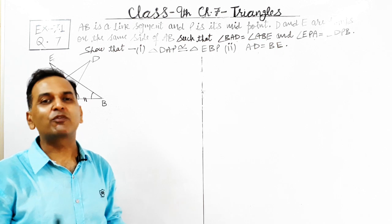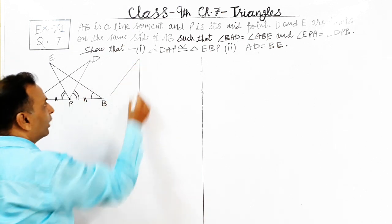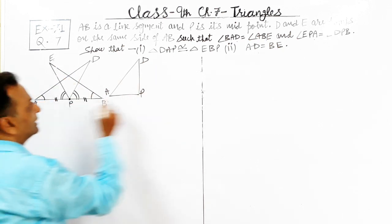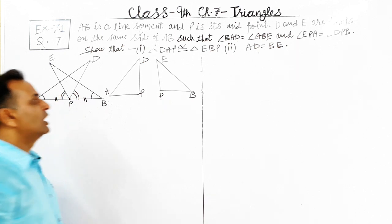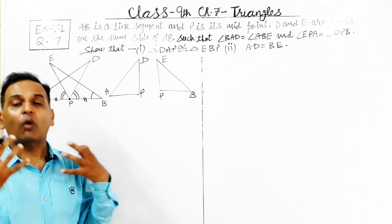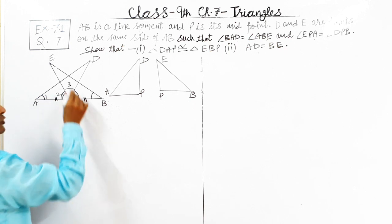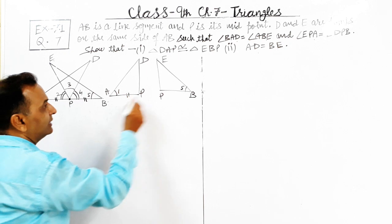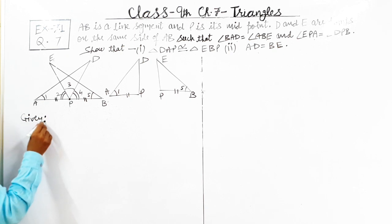Let us first draw triangle DAP and triangle EBP separately so that it becomes easier to understand the question. This is triangle DAP — triangle number one. This is triangle EBP — triangle number two, with points E and B. These are the two triangles we have to show congruent to each other. Let us check which angles we already have — suppose this is angle one, angle two, angle three, angle four, and angle five. AP and PB are equal.